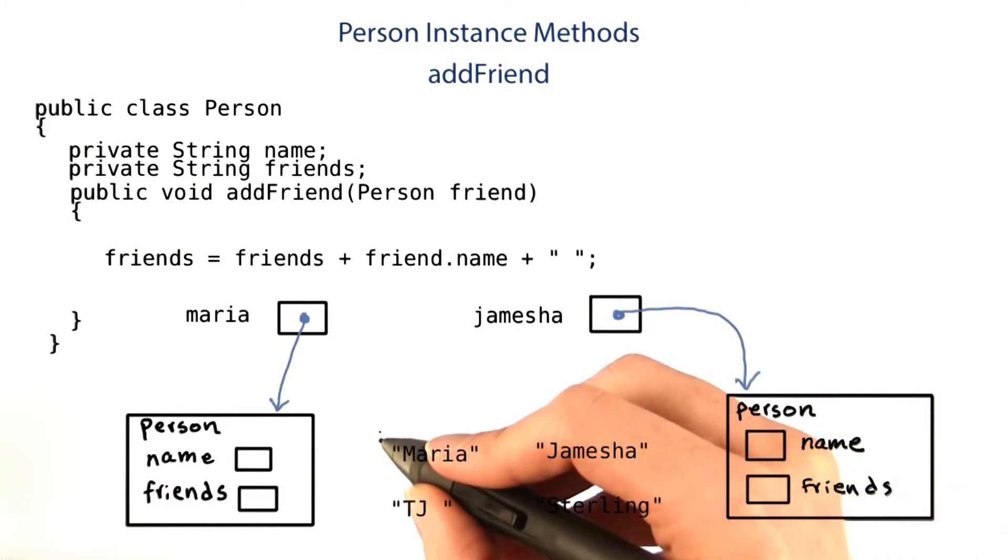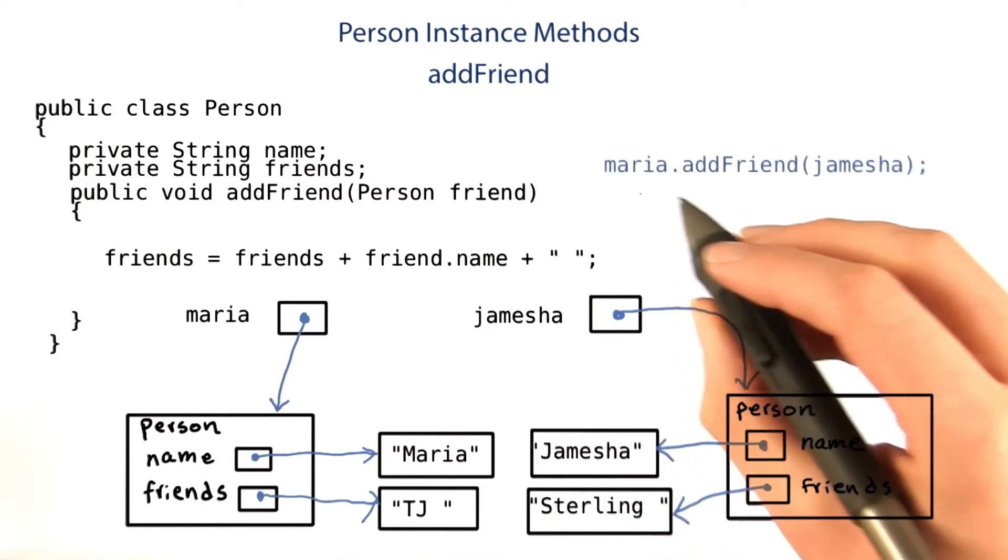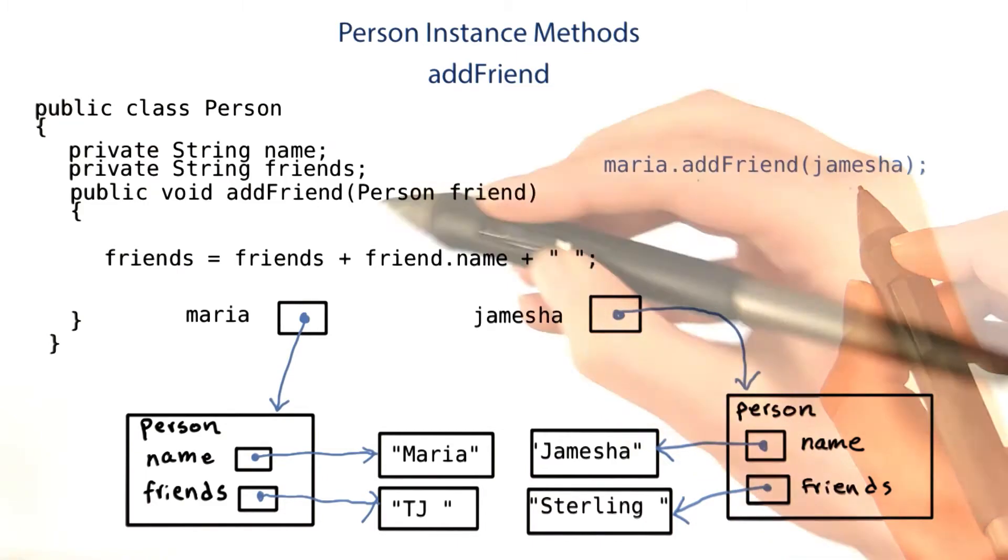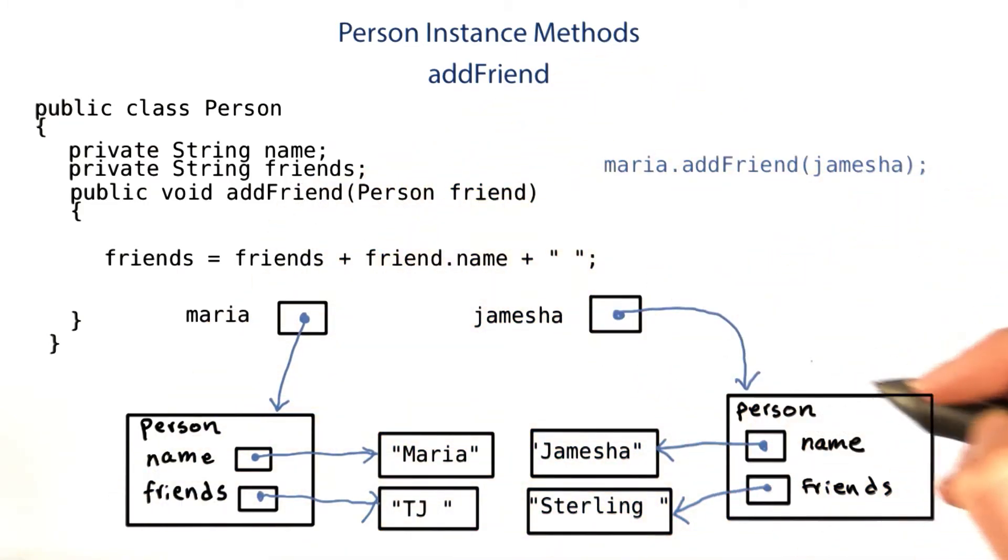We have string objects for Maria's name, Maria's current friends, Jameesha's name, and Jameesha's current friends. Let's say we call Maria.addFriend Jameesha. We call this method on the Maria object, and we pass in as an argument the Jameesha object.